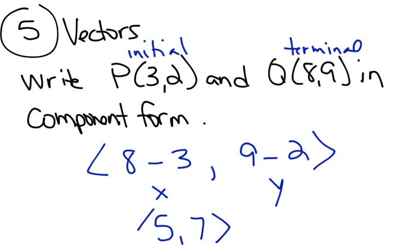So 5, 7 would be your component form. Remember, that tells you the length of the vector — it doesn't tell you where the vector starts and stops on the coordinate plane, because you can draw several vectors that are all the same vector but in different locations.